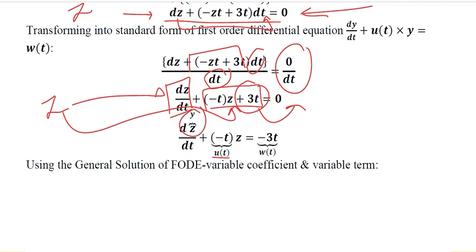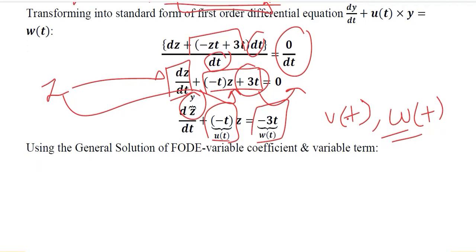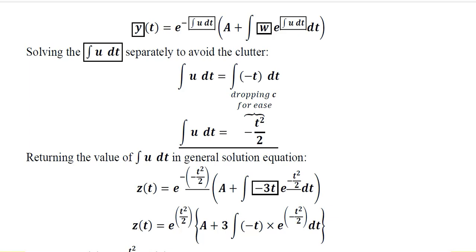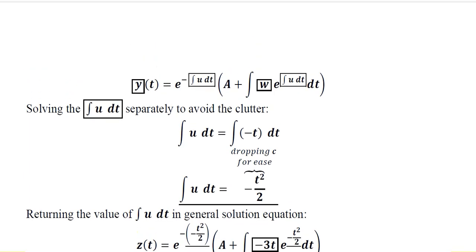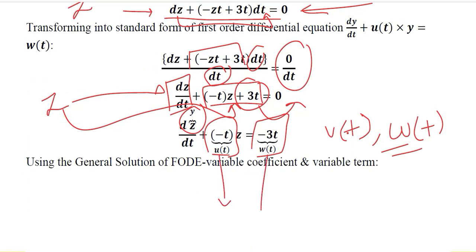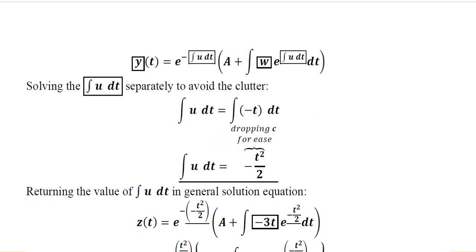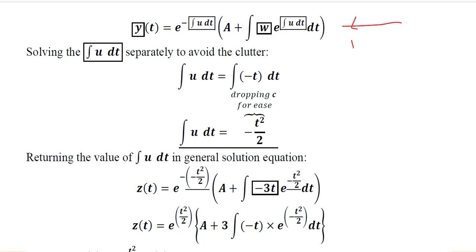Now we have that similarity where we have dy over dt plus u(t) times y is equal to w(t). However, instead of y, we have z here. And instead of u(t), we have its value that is minus t, and the value of w(t) is minus 3t. So now I have the values of u(t) and w(t). This is the case of first order differential equation with variable coefficient and variable term.